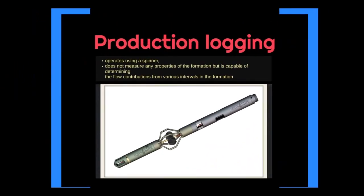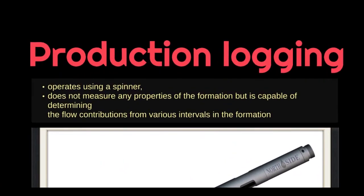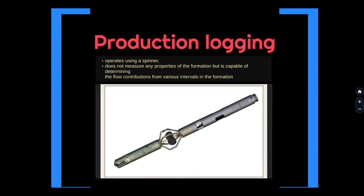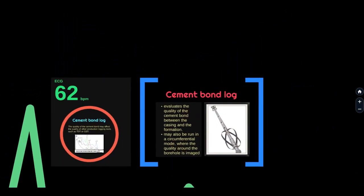Production logging: Production logging tools are run in completed wells to ascertain the nature and behavior of fluids in or around the borehole during production or injection. These logs are used to analyze dynamic well performance and the productivity or injectivity of different zones, to diagnose problem wells or to monitor results of a stimulation or completion. This discipline deals with a variety of techniques used to measure well performance with terms ranging from annular flow to basket flow meter, from hold up to water cut meter.